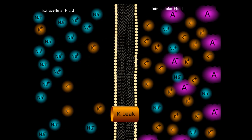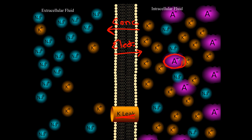Let's consider a special scenario with only a potassium leak channel — no sodium-potassium ATPase and no sodium leak channel. Two forces act on potassium: the concentration gradient tends to push potassium outside the cell because there's more inside, but the electrical gradient tends to pull it back inside because of the large negatively charged proteins inside attracting positive charges. In this case, the concentration gradient is stronger than the electrical gradient, so potassium would tend to leak out.